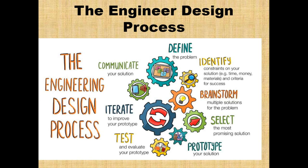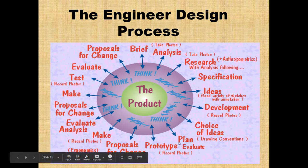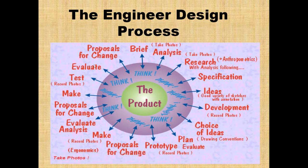Here's another example: define, identify, brainstorm, select, prototype, test, iterate, and communicate. And then there's a very detailed version with steps like: research, specifications, ideas, development, choice of ideas, plan, evaluate, prototype, proposals for change, make, evaluate, analysis, proposals for change, make, test, evaluate, proposals for change. It's telling you that you can always add additional steps into your design process — you can't take away, but you can add — as long as they include those main five or six steps.